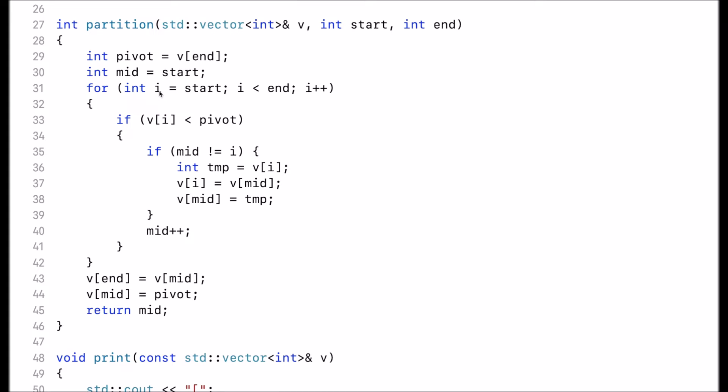And then it starts a loop starting at index i, initialized to start, i less than end. So we exclude the pivot element and in each iteration it increments i by 1. So it basically iterates over all the elements from the start until the end except for the pivot element.